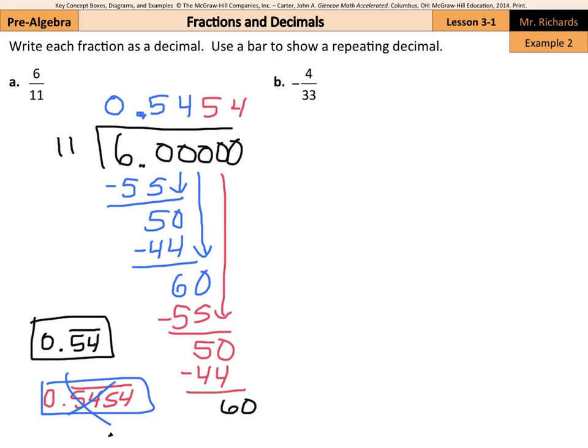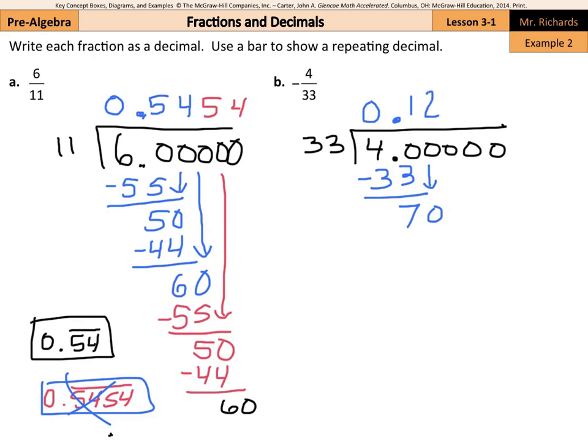And we can use the same process to solve negative 4 thirty-thirds. We'll just save the negative for the end. So, we'll put the 4 on the inside of our division problem with a bunch of decimals and divide by 33. Now, 33 doesn't go into 4, but it goes into 40 once. We'll subtract the 33 away and we get 7. Bring down your 0, and 33 goes into 70 twice. 2 times 33 is 66. We end up with a 4, and you bring down your 0. Now, the more you solve of these, you'll quickly be able to recognize, I'm looking to get my 33 into 40. I already did that up here. So, I'm going to have some repeating.